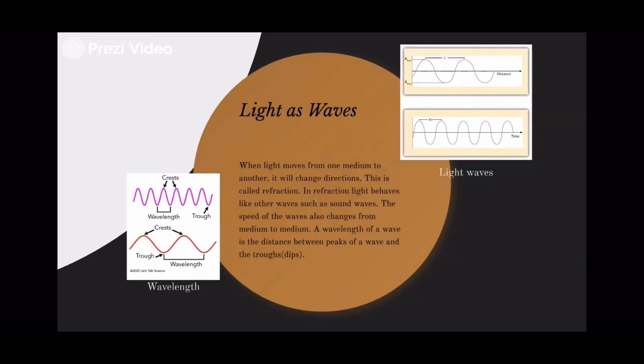The speed of the waves also changes from medium to medium. A wavelength of a wave is the distance between the peaks and the troughs, the dips.